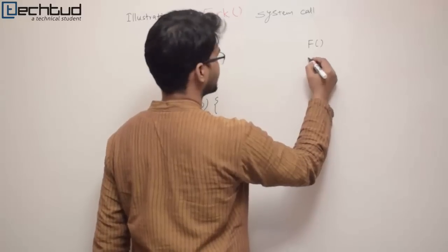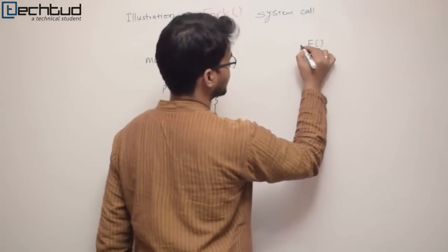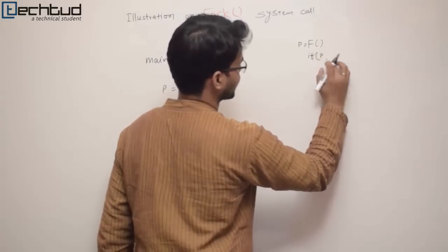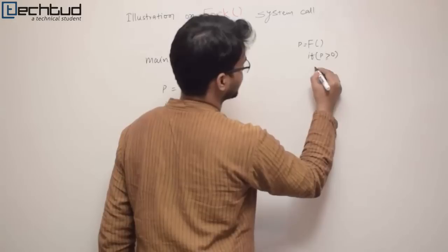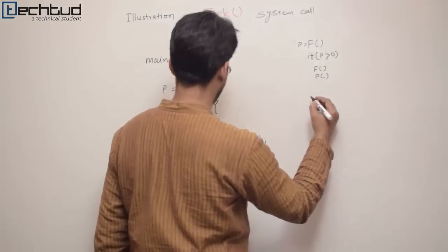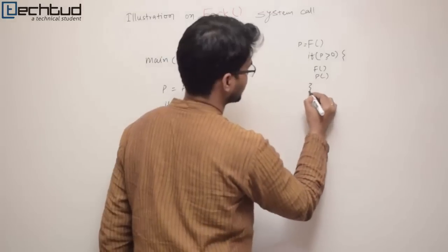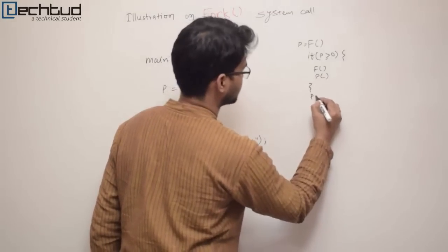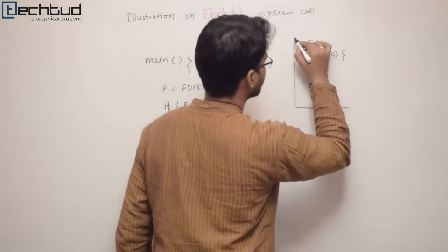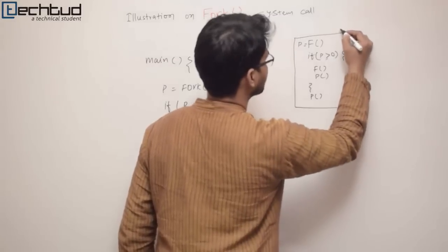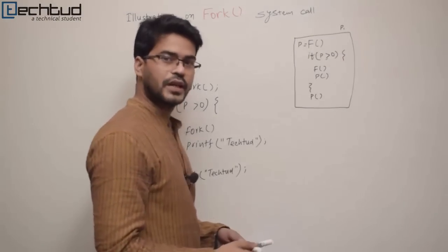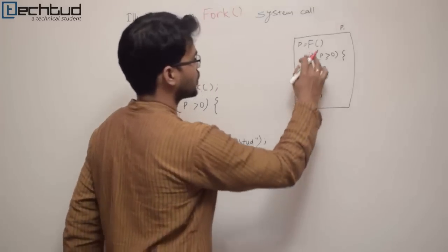Let me write it down in short form. We have the fork call, then an if condition: if p is greater than zero, then we have another fork, then a print statement, then that closes. Then we have another print at the end. So this is the whole structure. This is my parent process — I'm calling it P1.